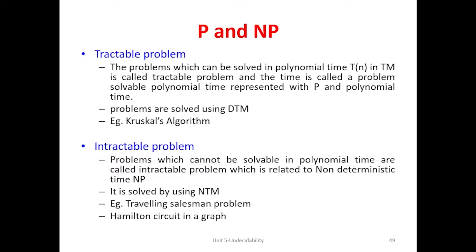If you consider an algorithm, an algorithm describes a decision problem if its output is simply in a yes/no format. If any problem has a solution in a yes/no format, then that problem is called a polynomial problem, denoted as P. The class P consists of all decision problems that can be solved on a Turing machine within a specific amount of time.